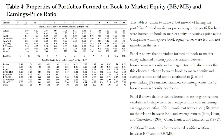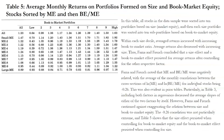Fama and French also formed portfolios on book-to-market equity and earnings-to-price. Portfolios formed on book-to-market equity exhibited a strong positive relation between book-to-market equity and average returns, and this could not be attributed to beta as post-ranking betas remained relatively consistent across the 12 book-to-market portfolios. Portfolios formed on earnings-to-price exhibited a U-shaped trend in average returns. Table 5 shows average monthly returns on portfolios sorted first on size, then on book-to-market equity: returns increased with book-to-market ratio within each size decile and decreased with increasing size, confirming that both effects persisted when controlling for each other.